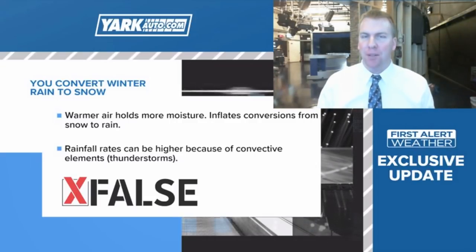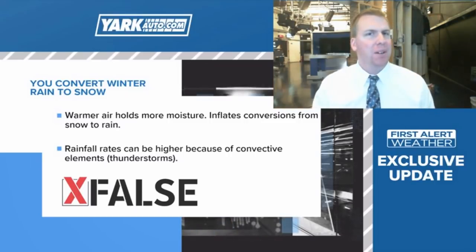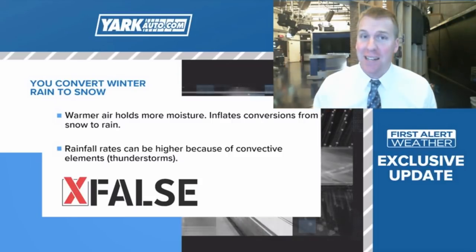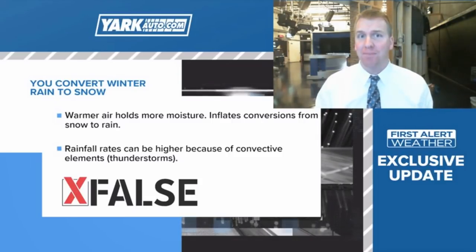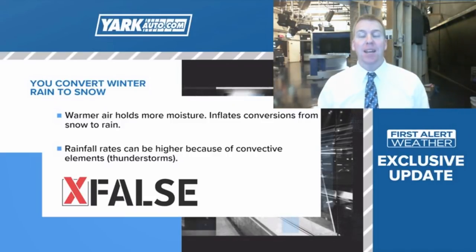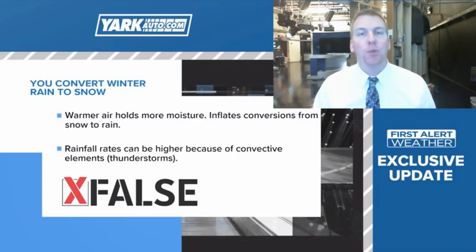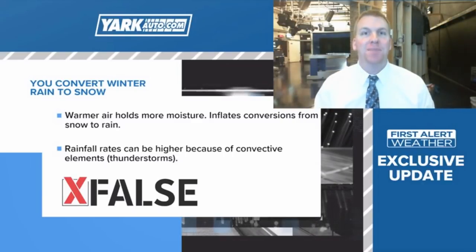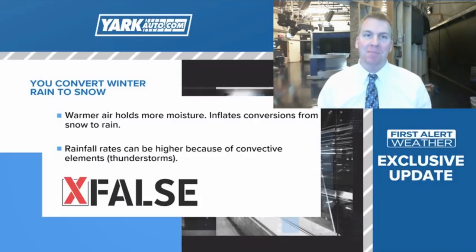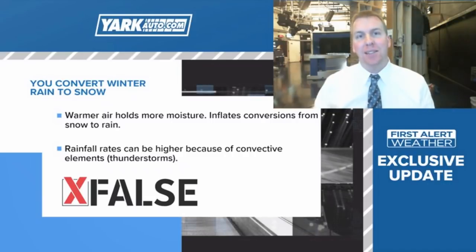Let me give you a good example of this. The past few days we've had two inches of rain — have you ever heard of a 20-inch snow in Toledo? It's because it hasn't happened. What if we were to get three inches of rain — 30 inches of snow? No way that has ever happened. Also, we can get higher rainfall totals because of what we call convective elements — thunderstorms. That leads to heavier rainfall rates, and again, that can lead to inflation when you try to convert rain to snow.